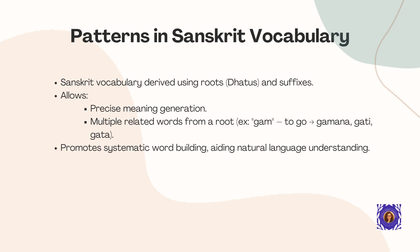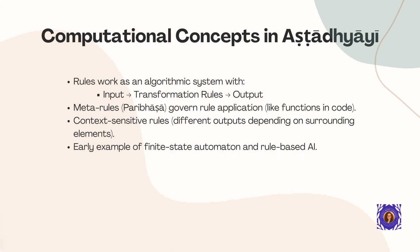Sanskrit vocabulary demonstrates remarkable semantic precision and systematic word formation. Words in Sanskrit are derived using roots called dhatus, combined with various suffixes. This system allows for precise meaning generation and the formation of multiple related words from a single root. This systematic approach to word building creates clear semantic relationships between related concepts, which greatly aids natural language understanding.